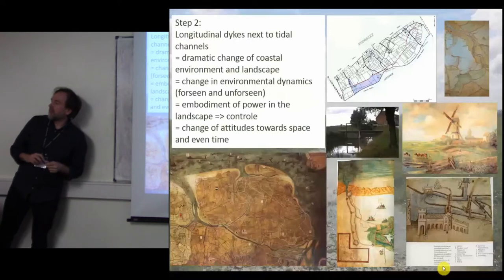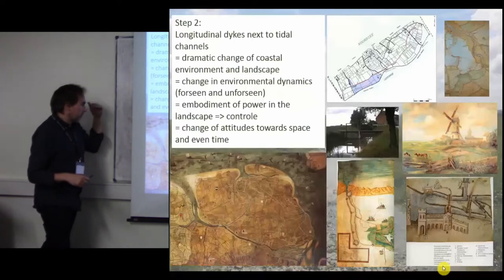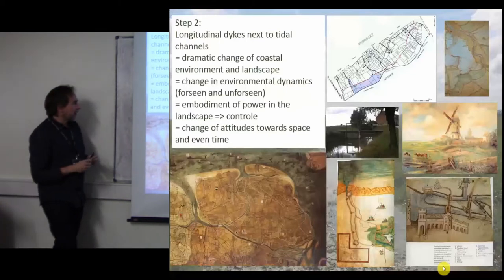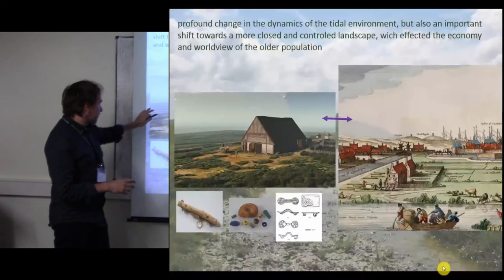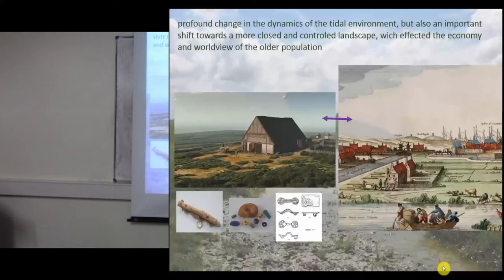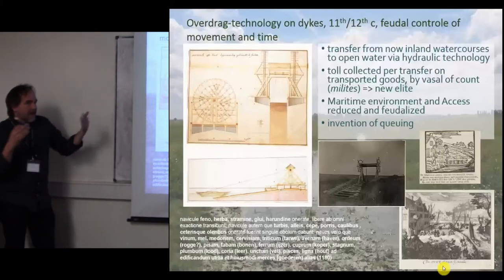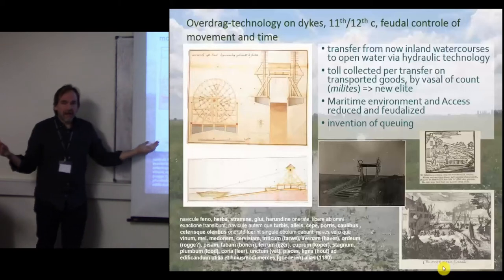This represents a dramatic change of the coastal environment — the environmental dynamics are no longer the same and a freshwater environment emerges. There is also an element of power: it is the count who builds the dikes and the count who controls them. The landscape shifts from open salt marsh to an embanked area with sluices, dikes, and watch-houses. And crucially there are the 'overdragten' — ship lifts — because what was formerly an open area is now closed off by dikes.